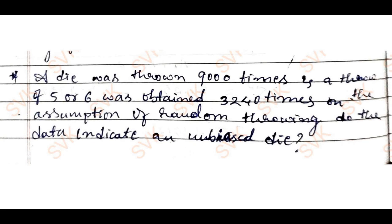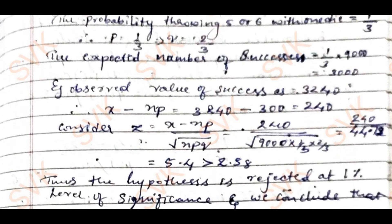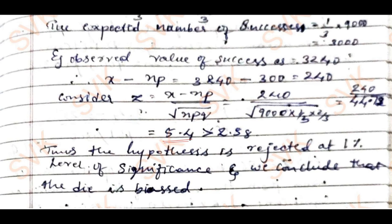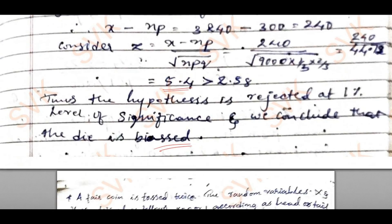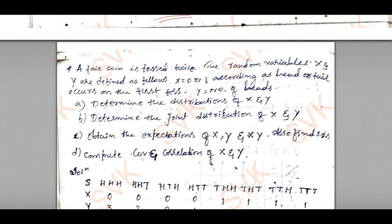Moving with the next problem: a die was thrown 9000 times and a throw of 5 or 6 was obtained 3240 times. Using hypothesis testing to determine whether the die is biased or unbiased — I get the value as 5.4. As this is greater than 2.58, I can say the given hypothesis is rejected at the 1% level of significance, and we conclude that the die is biased.